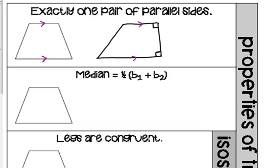The median of a trapezoid goes through the middle and its length equals one-half of base one plus base two. For example, if one base is six and the other is four, then the median would be five, because six plus four is ten, and half of ten is five.